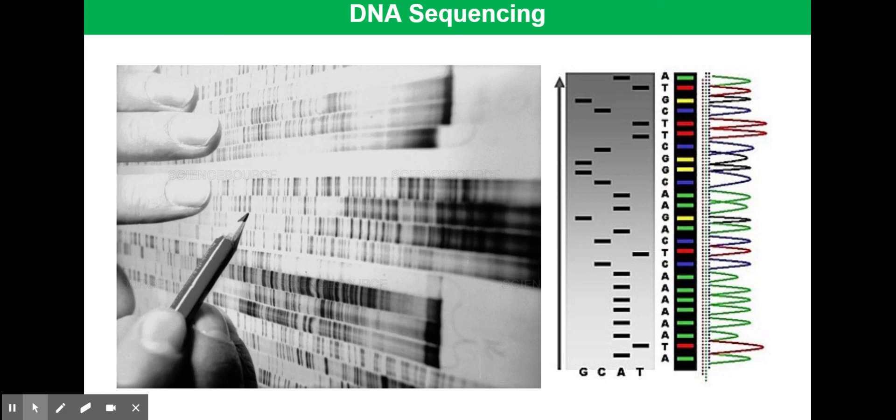Fluorescent dyes, instead of radioactive dyes or tags, were used to label the terminal bases. These dyes glowed when scanned with a laser beam, and the light signature was identified by a computer. This method dispensed with the need for technicians to read the autoradiograms, as shown in the image on the left-hand side of your slide.